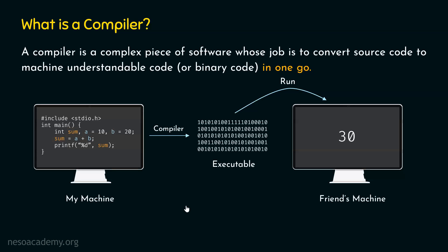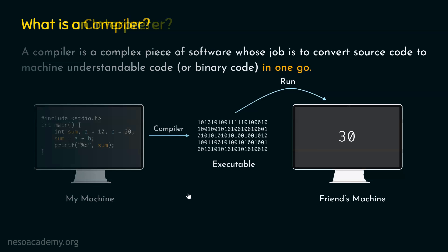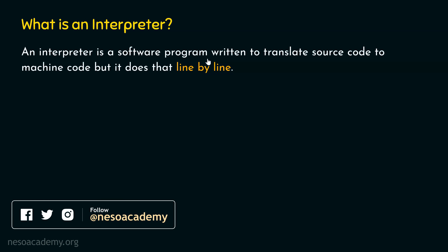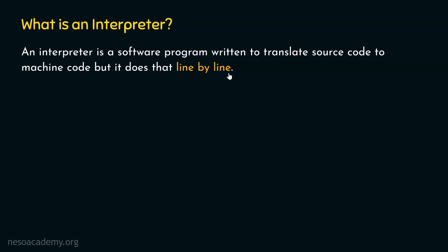Now we are ready to understand what is an interpreter and how interpreter translates source code to machine code. An interpreter is a software program written to translate source code to machine code, but it does that line by line — not in one go.